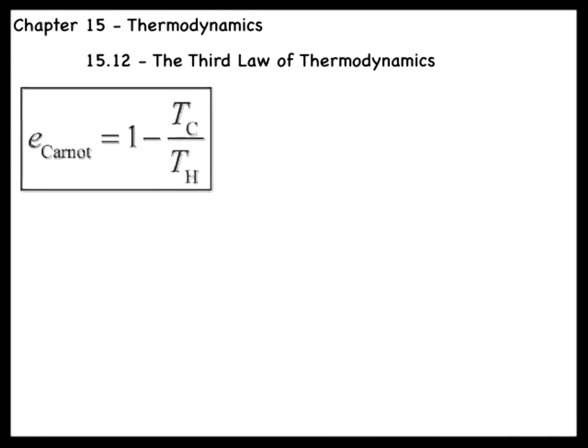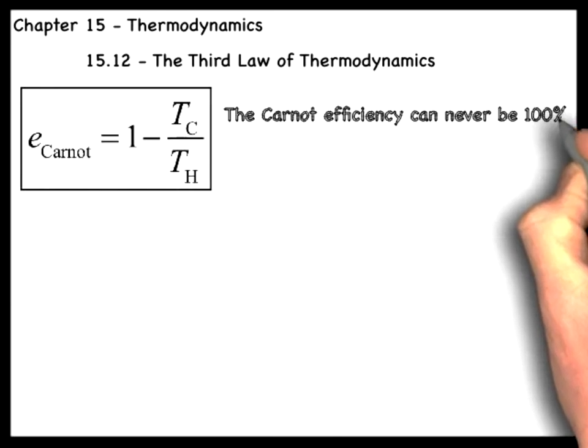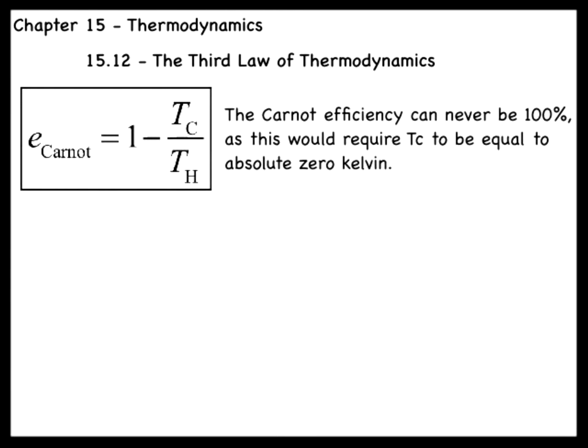Previously, in Section 9, we mentioned that the efficiency of a Carnot engine could never be 100%, because that would require the cold reservoir to have a temperature of absolute zero Kelvin.